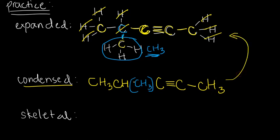And then, for skeletal, let's see how many carbons do we have in the straight chain. We have 1, 2, 3, 4, 5. Note that I'm not counting this because this is outside the straight chain.